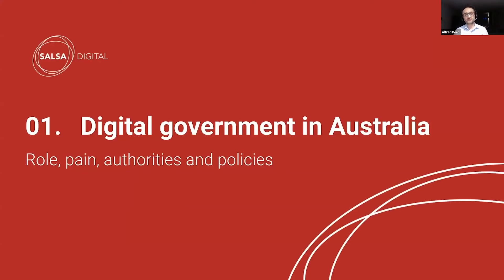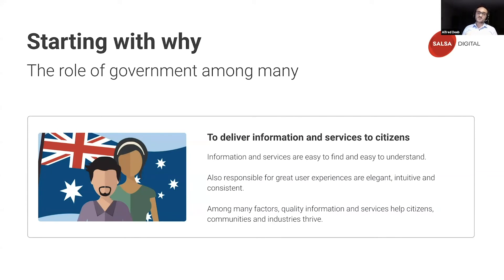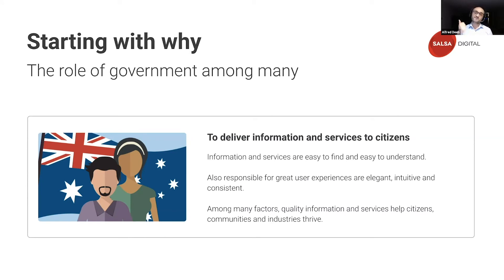Part one: digital government in Australia — the role, the pain, the authorities, and the policies. Let's start with the why. What is the role of government? Governments have many responsibilities, but one of the most relevant to us is that they are there to deliver information and services to citizens — information and services that are easy to find and easy to understand. They're also responsible for delivering great user experiences: experiences that are efficient, elegant, intuitive, and consistent. Quality information and services help citizens, communities, and industries thrive.